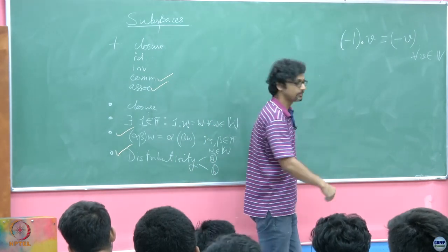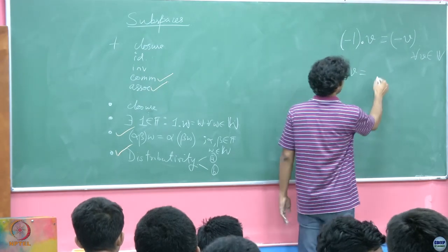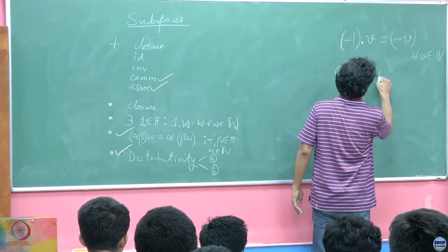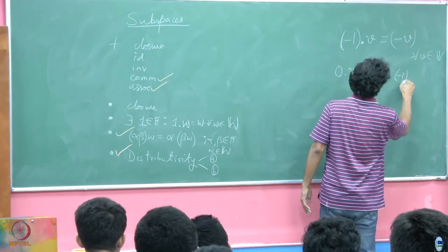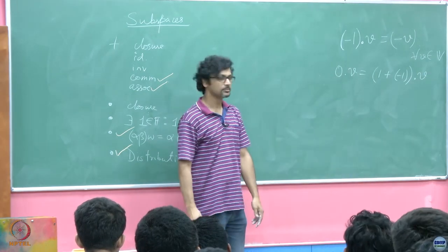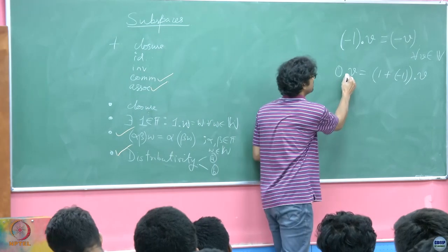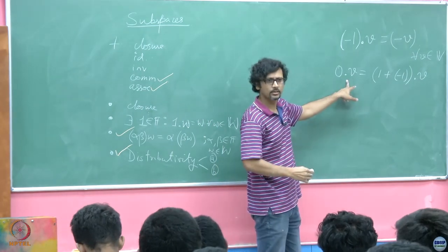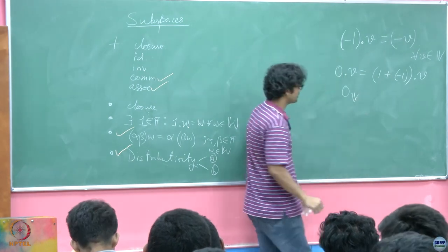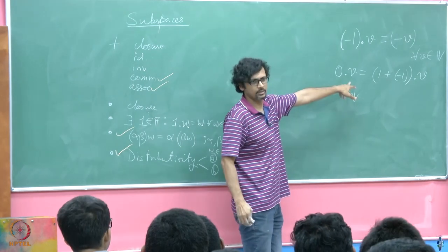Can we prove this? Our starting point: 0·V equals — well, 0·V equals (1 + (-1))·V. And because I have already seen what this object is going to be, this is nothing but the zero of the vector space — that is what we have just proved a while back.